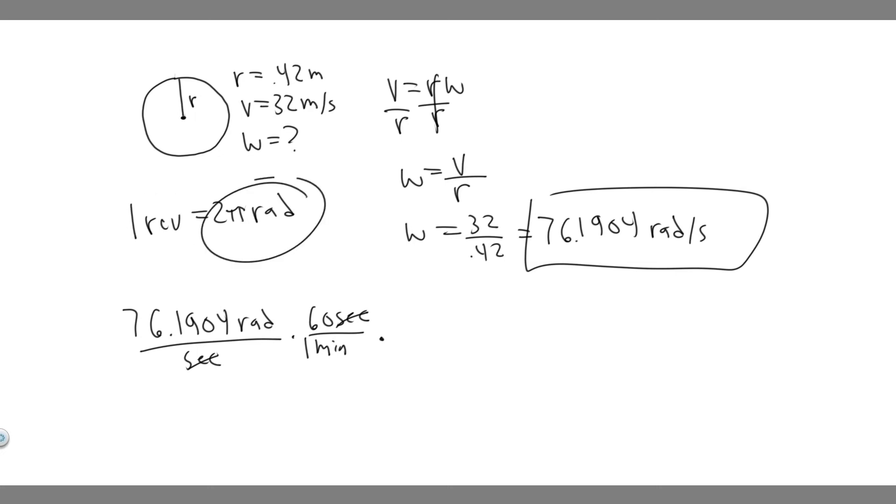You need to know that one revolution is equal to 2 pi radians. So if we want to convert from revolutions, we've got to multiply by 2 pi. Or sorry, in this case we're dividing by 2 pi. So 2 pi radians, that'll cancel the radians on the bottom, which equals one revolution.